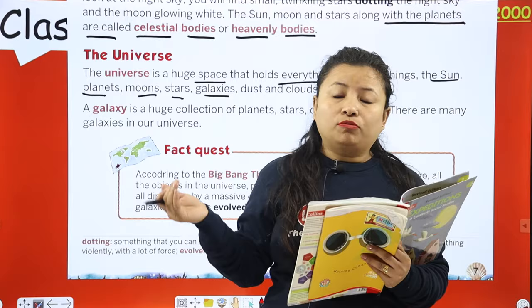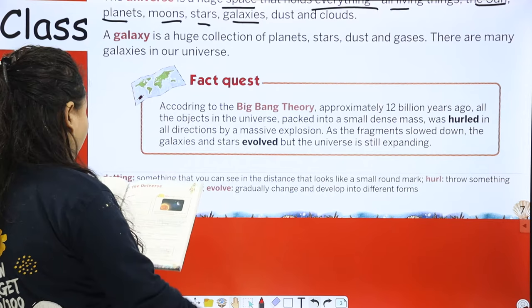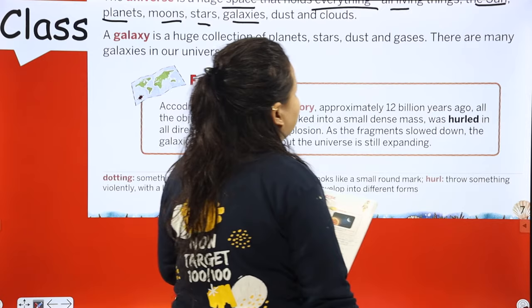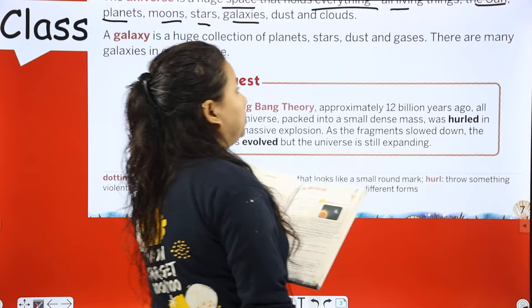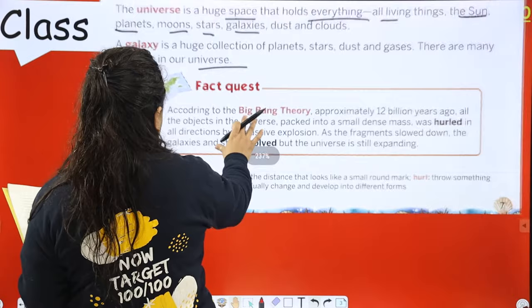The sun, moon, and stars along with the planets are called celestial bodies or heavenly bodies. A celestial body is any natural body outside of the Earth's atmosphere. A galaxy is a huge collection of planets, stars, dust and gases. There are many galaxies in our universe.